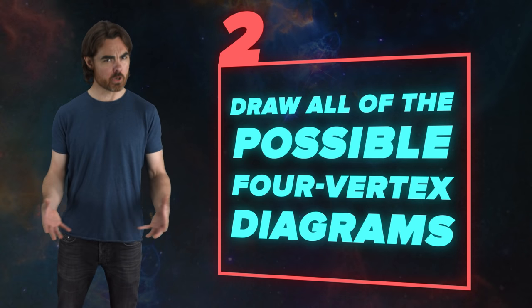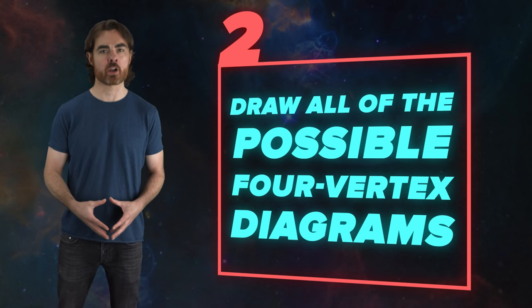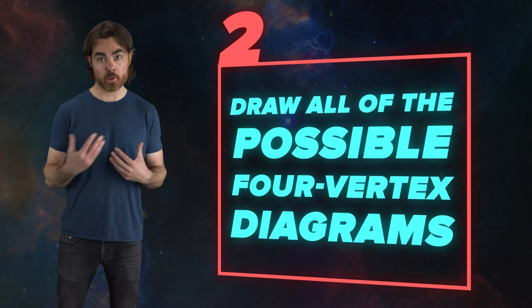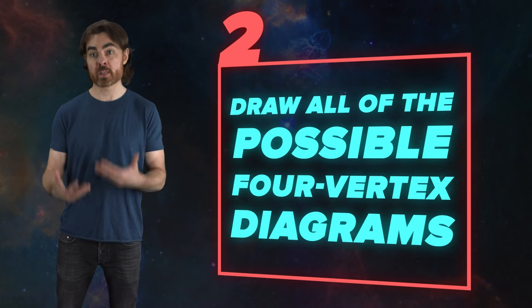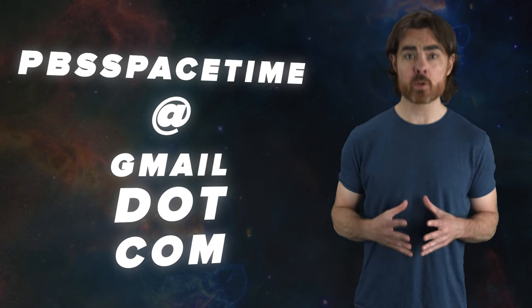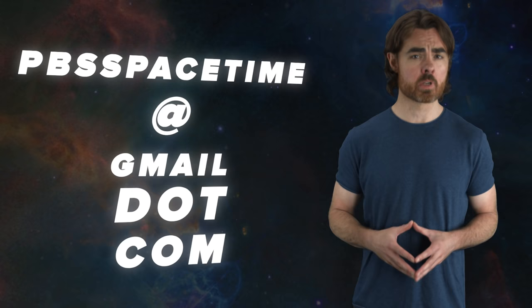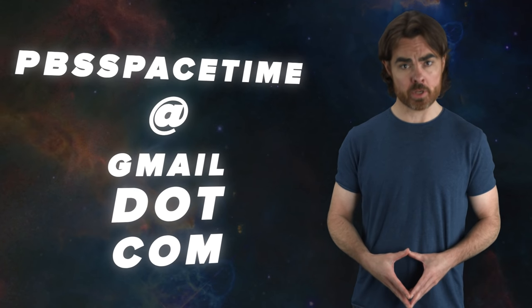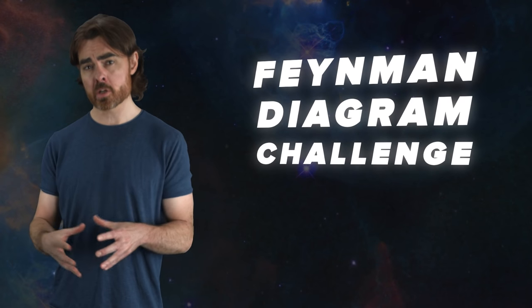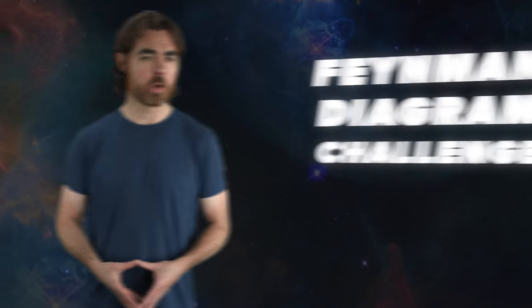For the latter, don't bother with what we call the self-energy diagrams, in which electrons or positrons emit and then reabsorb a photon. Send your neatly drawn Feynman diagrams to pbsspacetime at gmail.com within one week of the release of this episode, including the subject line the words Feynman diagram challenge, because we filter by subject line. We'll randomly choose five correct answers to win a spacetime t-shirt, and that includes a choice from brand new t-shirt designs.